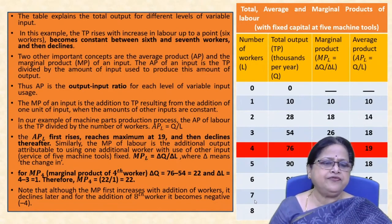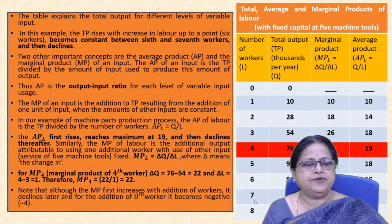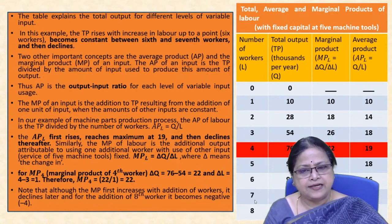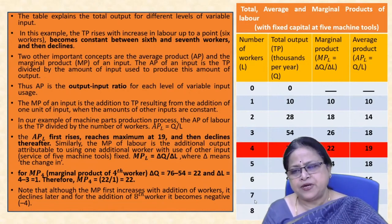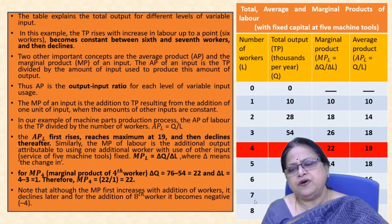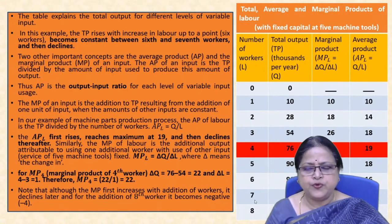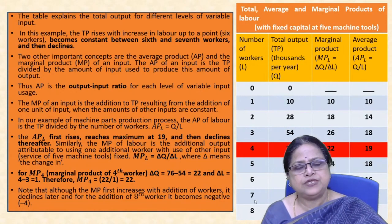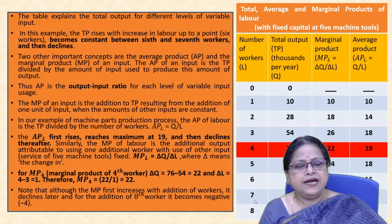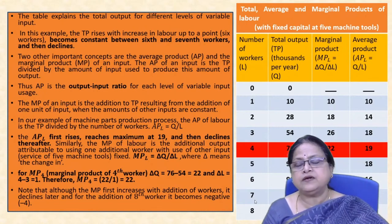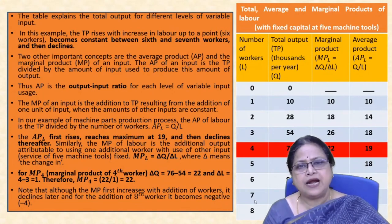Average productivity of labour first rises, reaches a maximum of 19 at the fourth unit, then declines. Marginal product of the fourth worker equals (76 − 54) / 1 = 22, which is ΔQ/ΔL. Although marginal product first increases with additional workers, it declines later — and at the 8th worker it becomes negative. At the 7th worker, marginal product becomes zero, meaning no addition to total product.